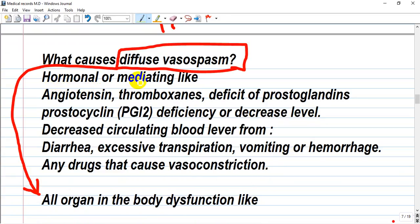What causes vasospasm? First one is hormonal - yes, hormonal, because a pregnant woman is like a bomb with hormones. Prostaglandins deficits or angiotensin increases, thromboxanes, prostacyclin deficiency, decreased circulating blood level - how it can occur, like in diarrhea, exercise, loss of stool, transpiration, vomiting or even hemorrhage. Any drugs that can cause vasoconstriction like adrenergics. All organs in the body can have dysfunction.